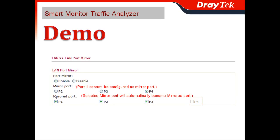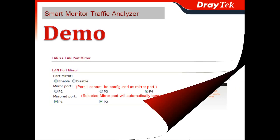Then you can enable the mirrored tip port, and there is a choice for port 1, port 2, and port 3 after I choose port 4. Port 4 will automatically become the mirror port.